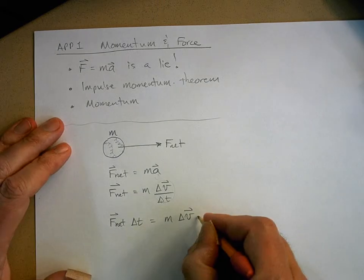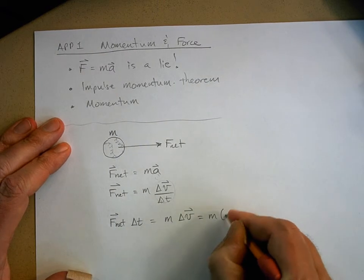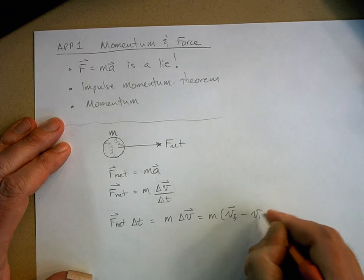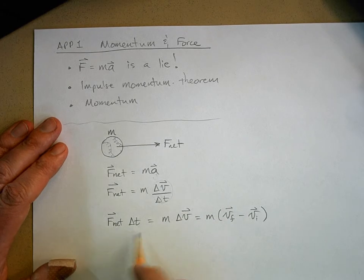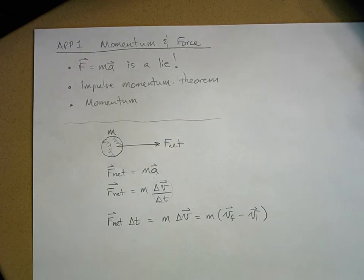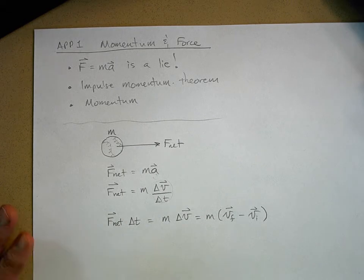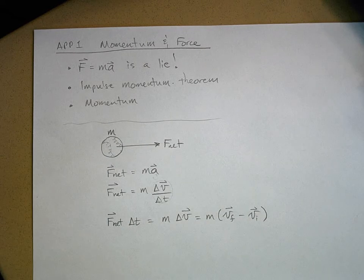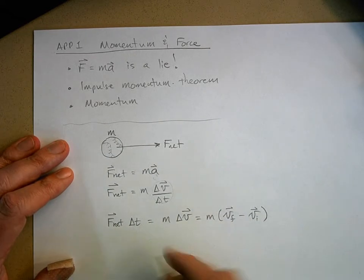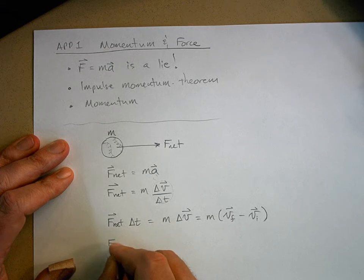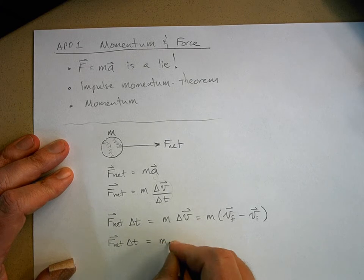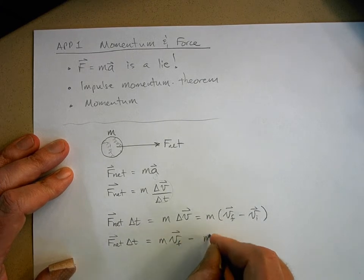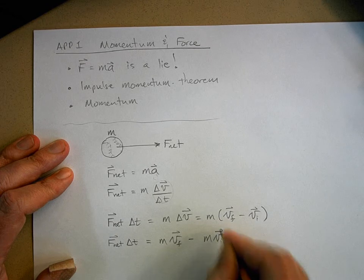Let's expand this out. Mass times change in velocity is mass times final velocity minus initial velocity - that's what delta-v means. I'll leave delta-t as is. Algebraically, I can distribute the mass into the parentheses: force times time equals mass times final velocity minus mass times initial velocity.